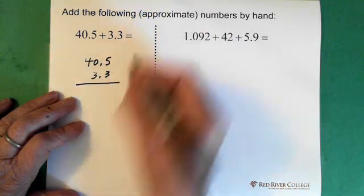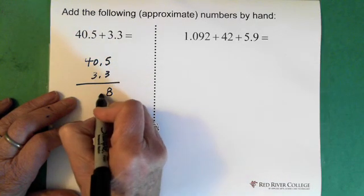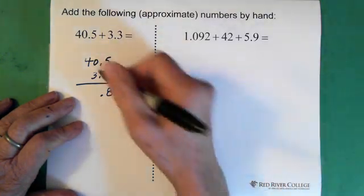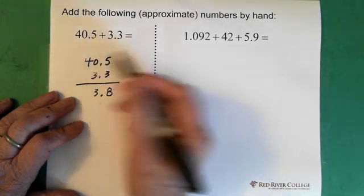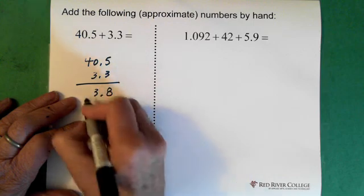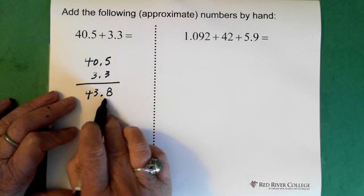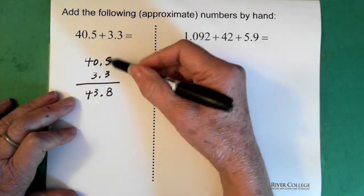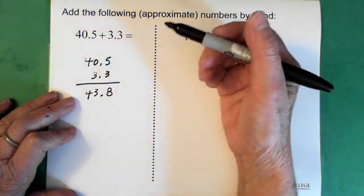We add the 5 and the 3 and we get an 8. The decimal goes here. We add the 0 and 3 and get a 3. And we add the 4 and the 0 and we get a 4. So the answer is 43.8. We see here, as I already mentioned, that we're at the tenth place. So then our answer stays at the tenth place.